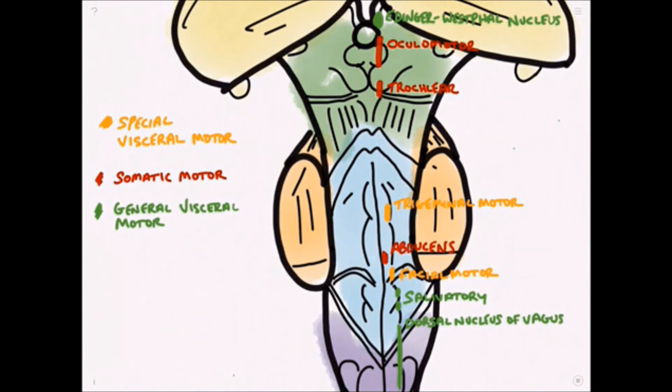And the nucleus ambiguous contains the cell bodies of nerves that innervate the muscles of the soft palate, the pharynx, and the larynx, which allow us to talk and swallow, although ideally not at the same time.